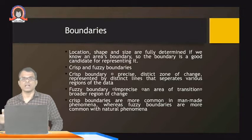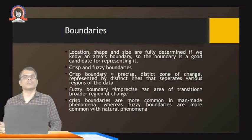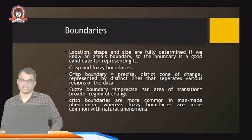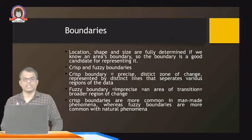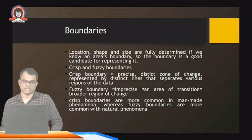For example, at the seashore the water level is continuously changing — if I want to draw the boundary for that water level it is not possible because in a single day it changes many times. Such boundaries are called fuzzy boundaries. Some boundaries change only after several years — like the boundary of a mountain — and those are called crisp boundaries.